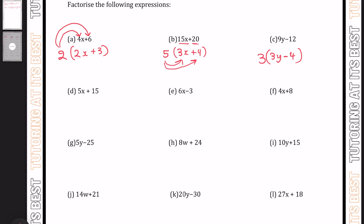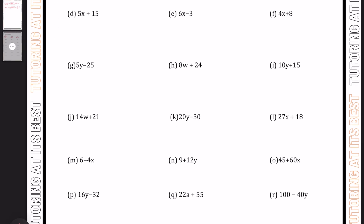Don't forget to pause the video at any given time, attempt the question, and then press play when you're ready. Let's move on to part D: the common factor between 5 and 15 is 5, giving us 5(x + 3). For E, what goes into 6 and 3? We know it's 3, giving us 3(2x − 1), because 3 times minus 1 is minus 3. And for F, what two numbers go into 4 and 8? That's going to be 4, giving us 4(x + 2), since 4 times x is 4x and 4 times 2 is 8.